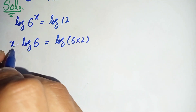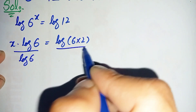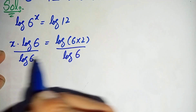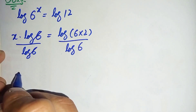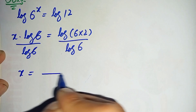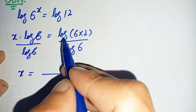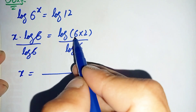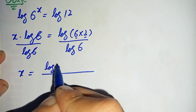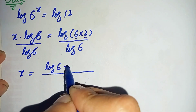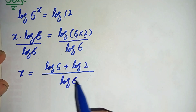Next we will divide both sides by log of 6 to eliminate log of 6 from the left hand side, so log of 6 and log of 6 will be cancelled, and only x will be left. In the numerator we will use the log property: log of a product of two numbers equals log of the first number plus log of the second number. So this becomes log of 6 plus log of 2, divided by log of 6.